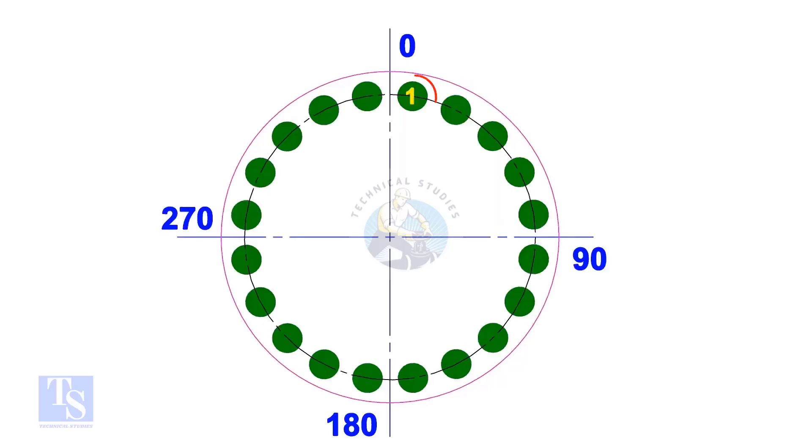Start tightening the first bolt from 0 degrees, but only 20% of the torque value. Tighten the bolt next to 180 degrees, that is exactly 180 degrees opposite to the first bolt. Tighten the bolt next to 90 degrees, that is actually 90 degrees to the previous bolt.